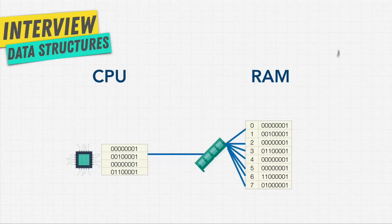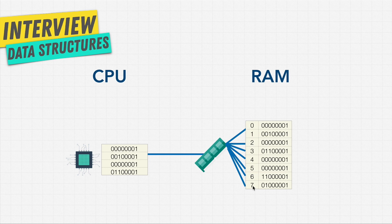You can think of RAM in the computer as a massive storage area — kind of like a data structure. This massive storage area has shelves that are numbered. We call these addresses. It's a really big shelf that holds a lot of information and allows us to run programs on our computer.